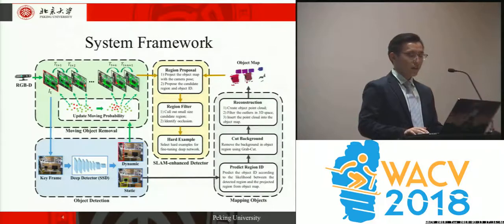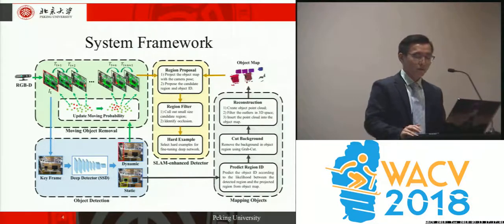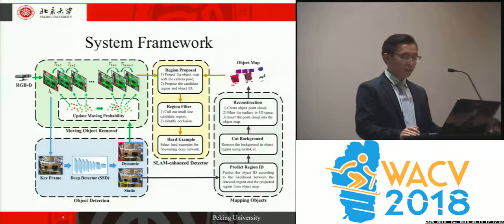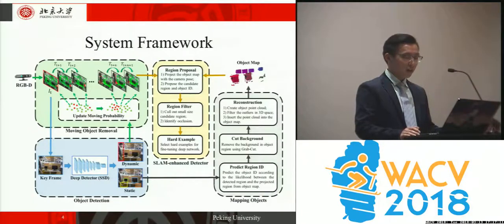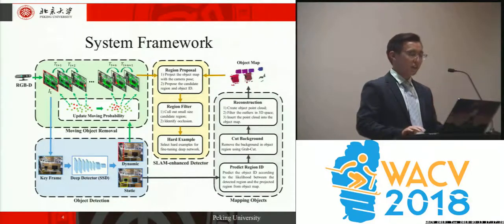Here is the framework of our vision system. The system is mainly composed of four modules: moving object removal, object detection, SLAM enhanced detector, and mapping objects. The moving object removal module filters out feature points associated with moving objects. The object mapping module reconstructs static objects detected in keyframes. The SLAM enhanced detector exploits the object map as prior knowledge to improve detection performance in challenging environments.